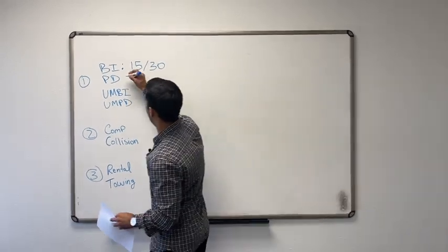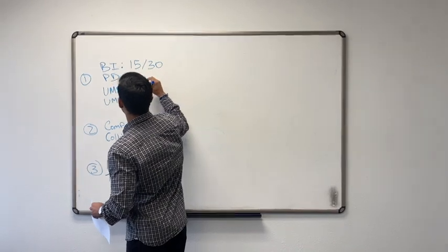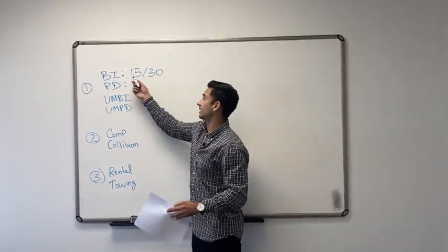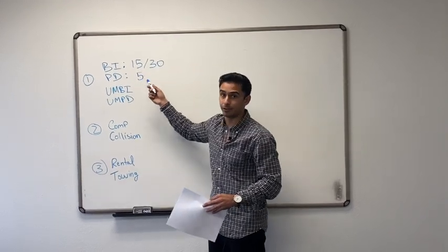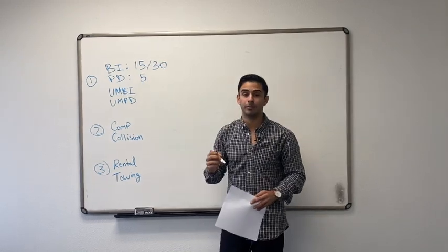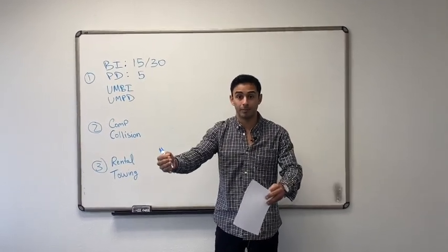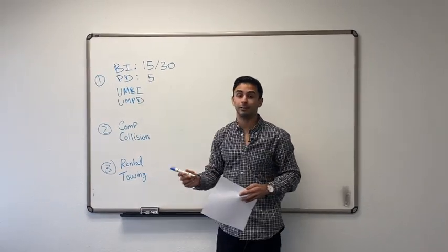Next, property damage. The minimum in California is five, which stands for $5,000. So you'll see them in these numbers, like 15/30. So it's $15,000, $30,000, five is $5,000. That's property damage. So property damage literally is exactly what it sounds like. If you damage property, you have coverage. Minimum in the state is $5,000.